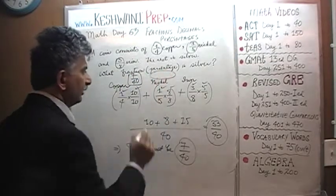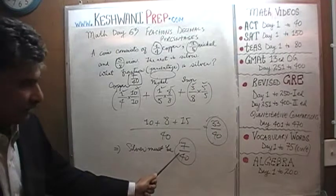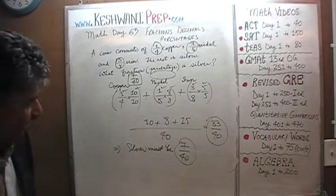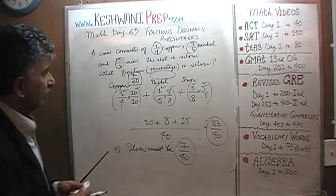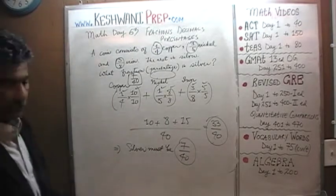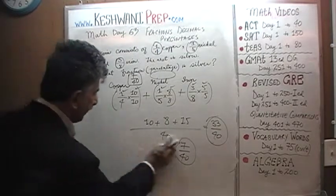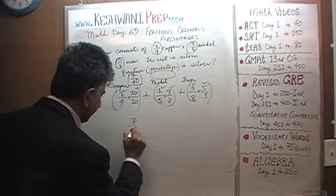Now they also want it in percentage. The question is: how do we convert 7/40 into a percentage? We need the room. We only have 7/40, we only did the work, so we can erase all of this. We don't need any of that.